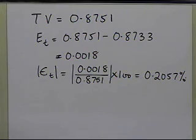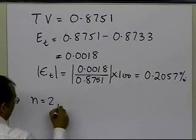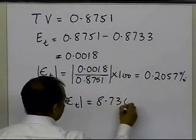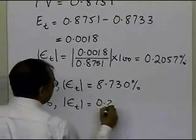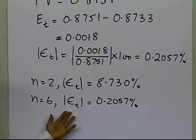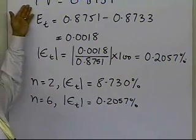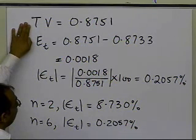So what you are finding out is that once you have started using the six-segment rule, you're getting 0.2057 percent relative true error. When we used n equal to 2, the relative true error we got was 8.73 percent, and when we are using n equal to 6, we're getting a relative true error of 0.2057 percent. You can very well see that by increasing the number of segments, our relative true error is decreasing quite a bit. Now, when we are numerically solving such integrals, we won't be privy to what the true value is — just like the true value here given is 0.8751 — we won't have this knowledge, because if we had this knowledge, we wouldn't be calculating it approximately in the first place.